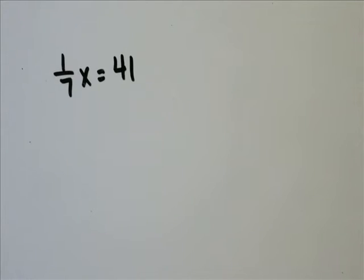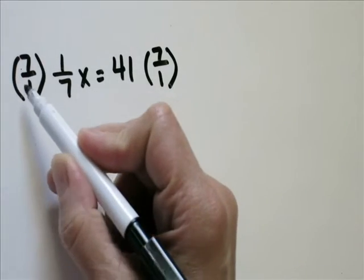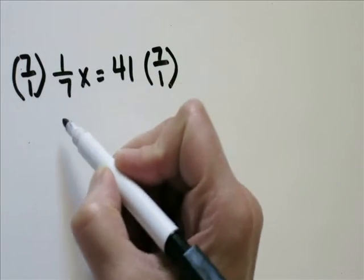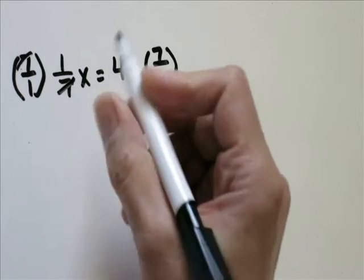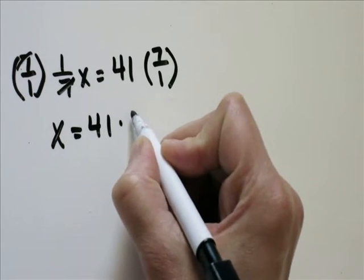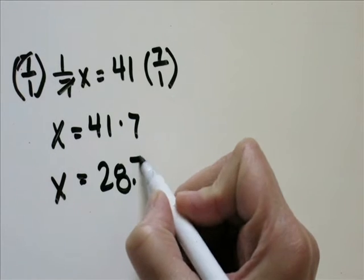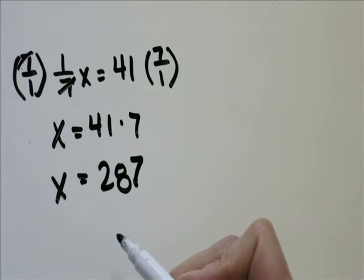Problem 21, 1 over 7 times x equals 41. We're going to want to isolate x by multiplying 7 over 1 to each side so that your 7s will cancel out, giving you x equals 41 times 7. 41 times 7 is going to be 287.